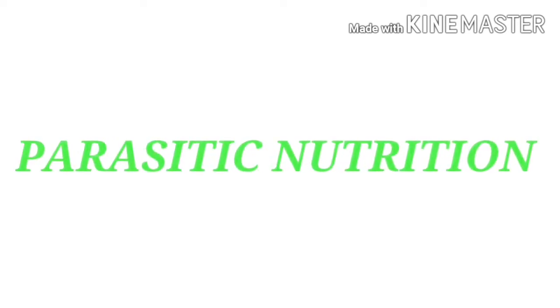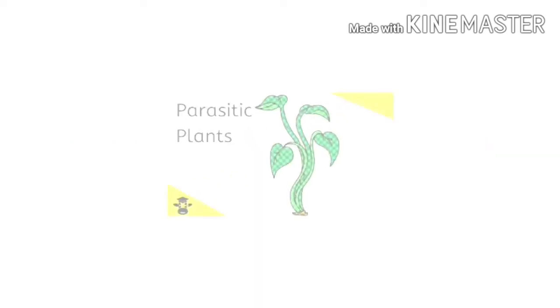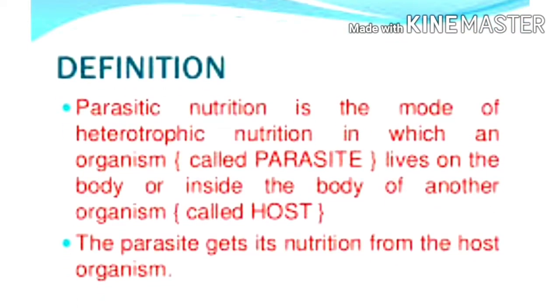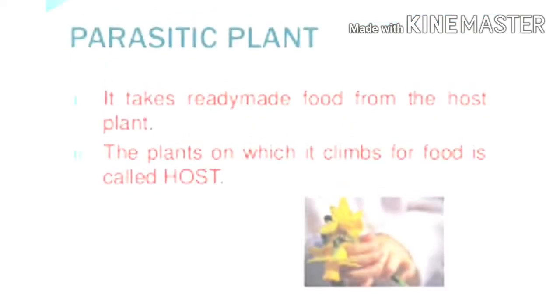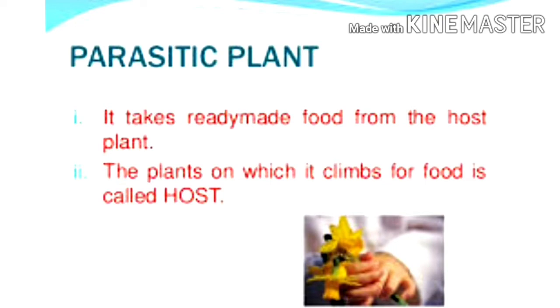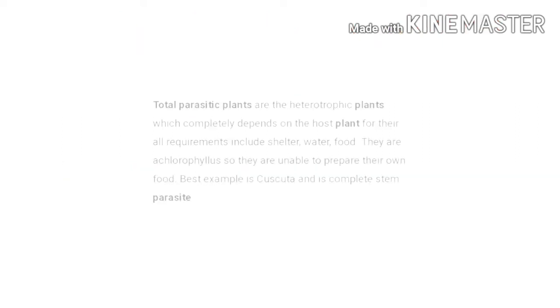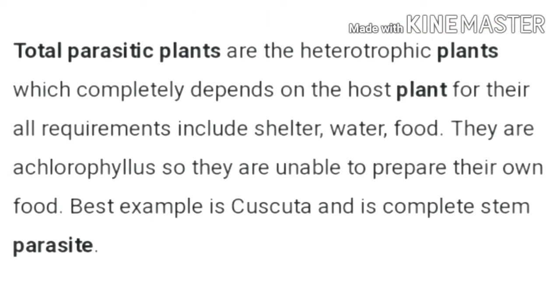Now we come to the next point, which is parasitic mode of nutrition. In parasitic mode of nutrition, plants depend on other plants or animals for their nourishment and food. Such dependent plants are called parasites. Parasitic plants may be total parasites or partial parasites.